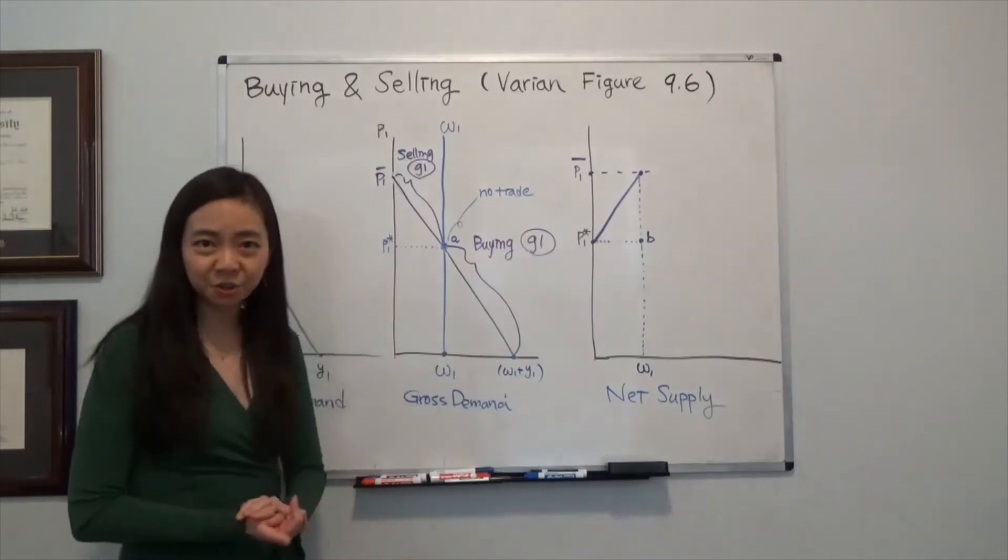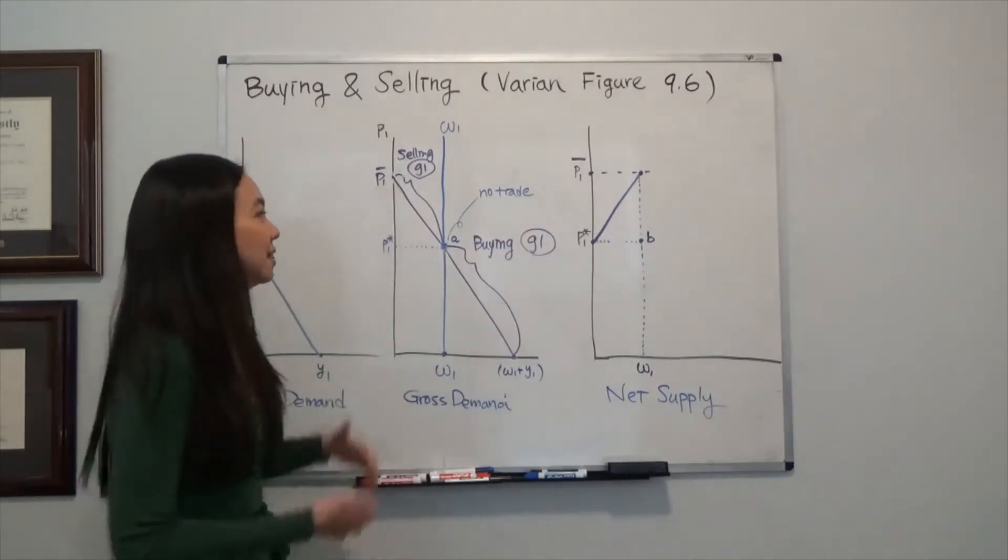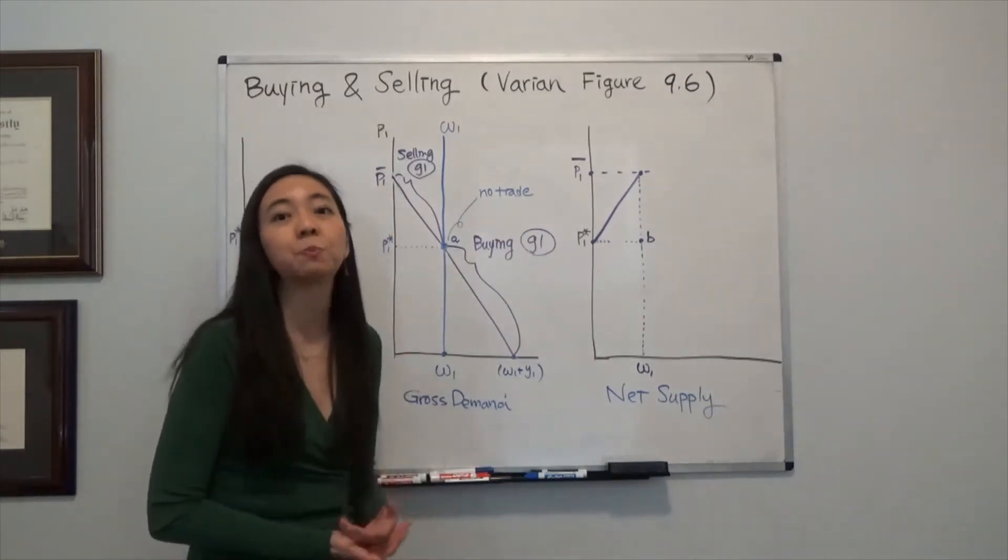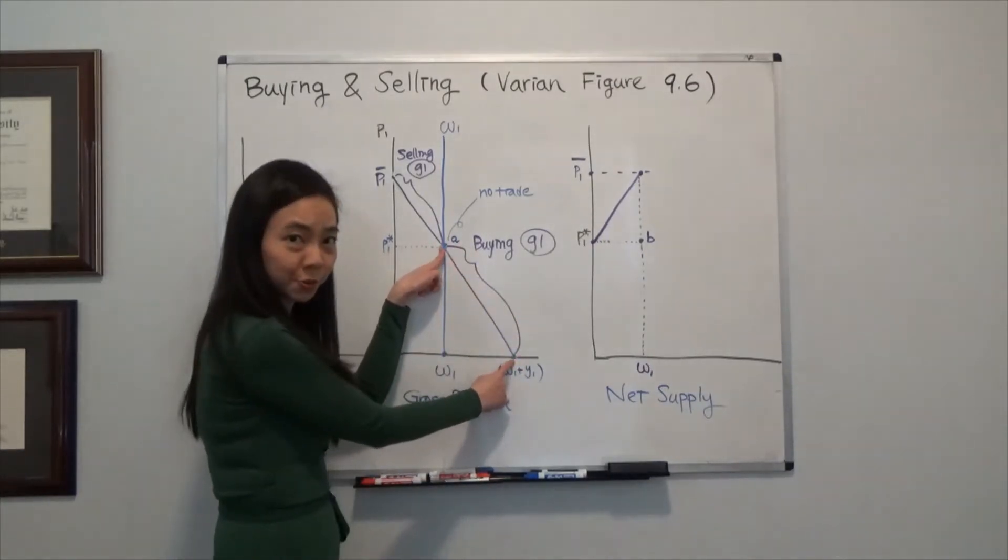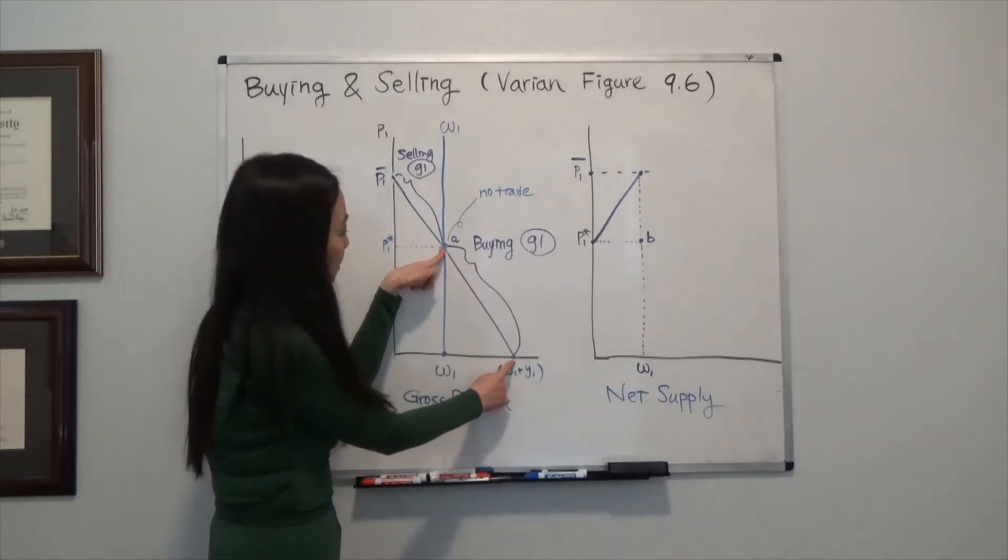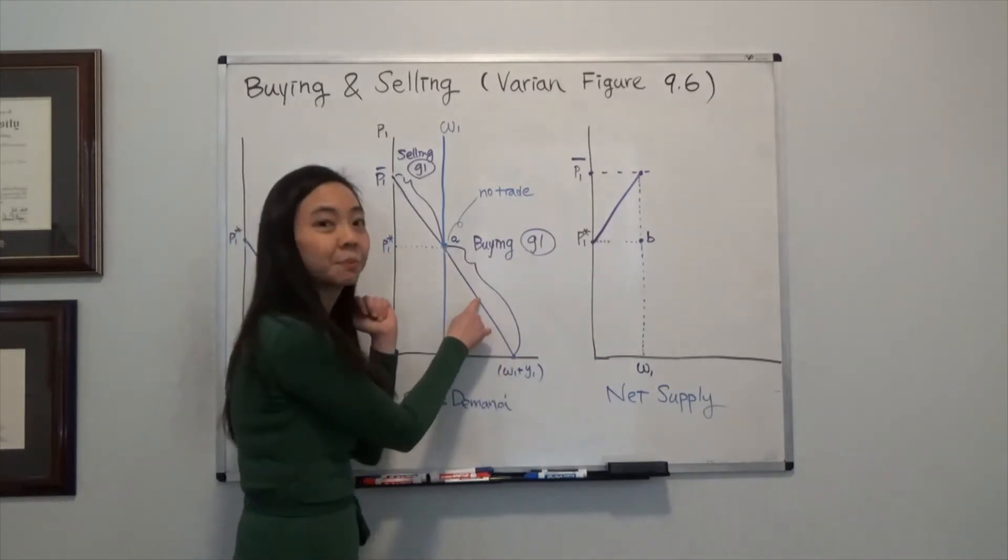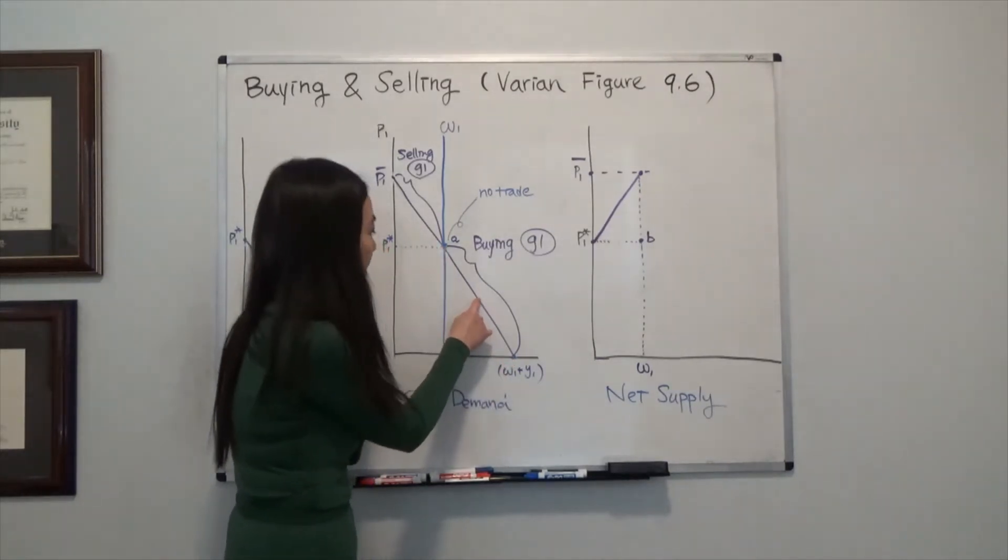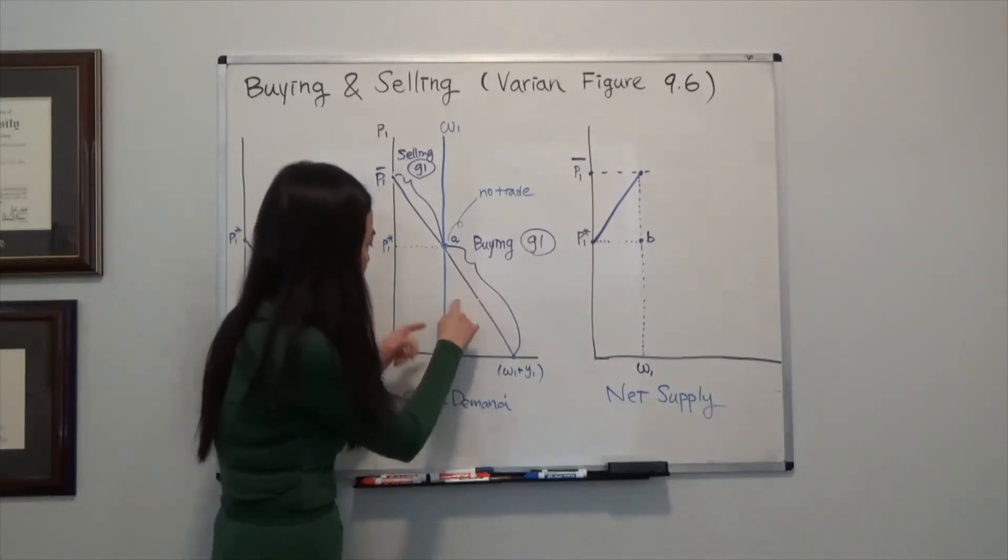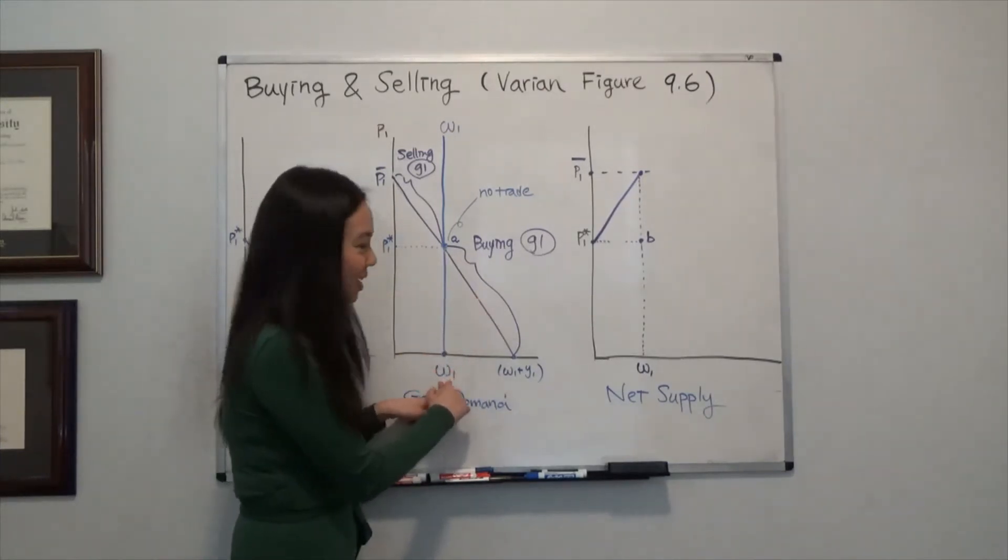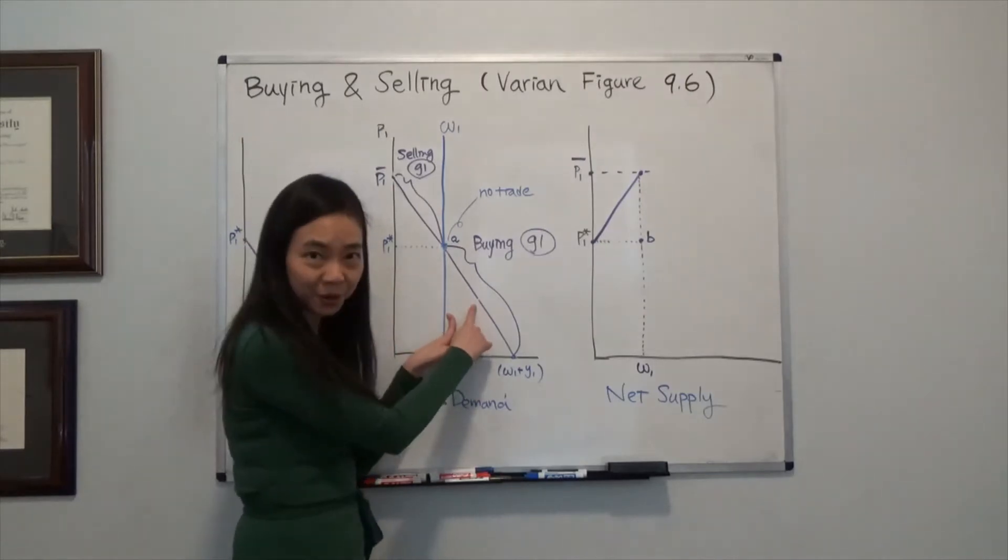If the price of Good 1 goes down, then that means it makes sense for me to buy more Good 1. So we're in the buying Good 1 zone. Therefore, if I'm at this point, that means I am going to consume a bundle X1, X2, where my X1 is going to be higher than omega 1. That means I am a net buyer of Good 1.